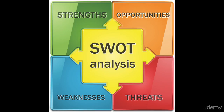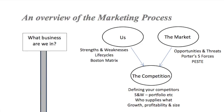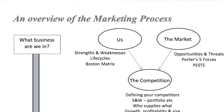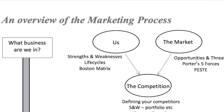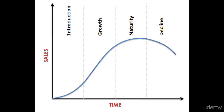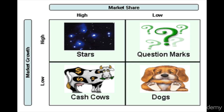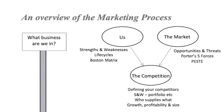When you're looking at yourself, two good ways to do so are to look at the life cycle of your products — are they new, up-and-coming, growing products, or are they on the way out? And also the Boston matrix, where you look at the market share you've got for your products and whether they're positioned in growing markets or not. That's a good way to think about yourself and your current situation.